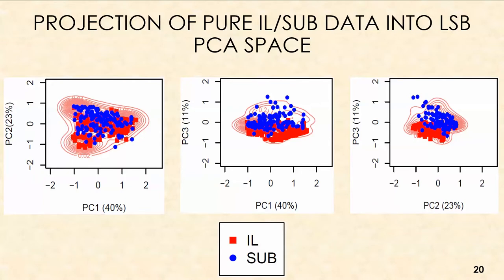For the projection of pure ignitable liquid/substrate data into the large-scale burn PCA space, in the first two principal component spaces we see a lot of overlap and mixing between substrates and ignitable liquids — substrates trending in one direction and ignitable liquids in another. However, looking at PC1 vs. PC3 or PC2 vs. PC3, we begin to see more separation, with ignitable liquids on the bottom and substrates persisting near the top — consistent with the neat IL/substrate PCA space.